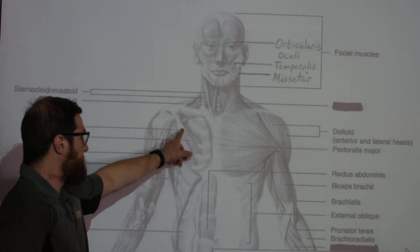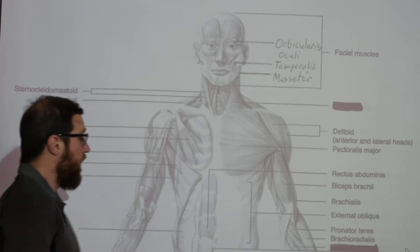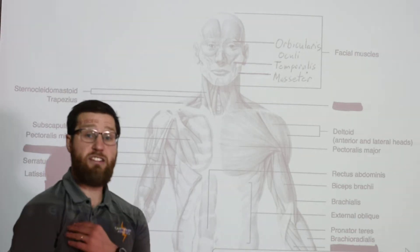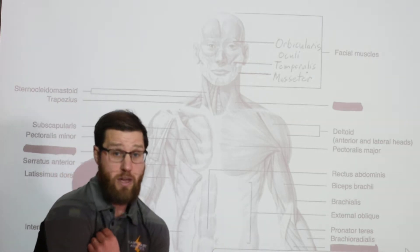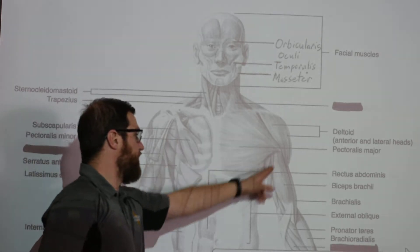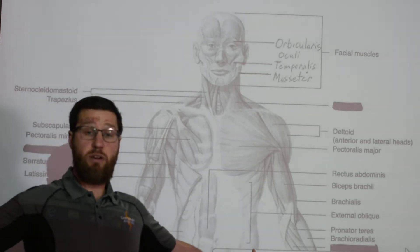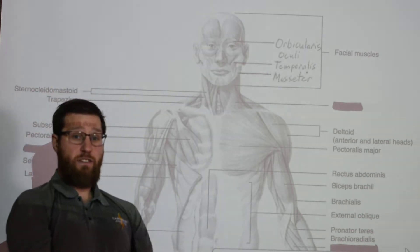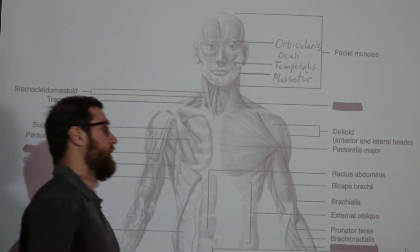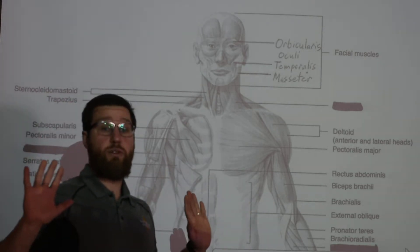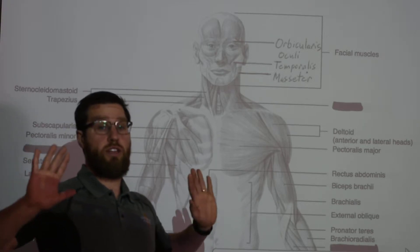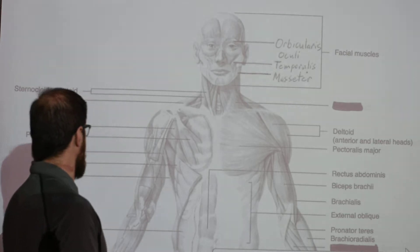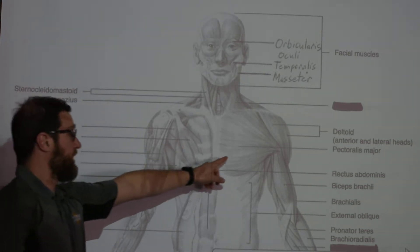Next we have the pecs. Your pectoralis minor is not as commonly known and is really involved in shoulder protraction — when you curl your shoulders in, that's primarily your pectoralis minor. Your pectoralis major is more superficial, and most of us know it as our pecs. It is involved in arm adduction and also flexion of the arm. Note that the pectoralis minor is deep and the pectoralis major is superficial.